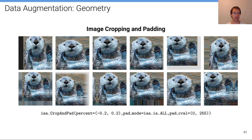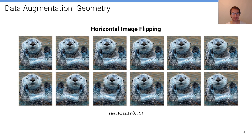Here's another example: image cropping and padding, which is very similar to the previous example. Instead of resizing, we have a padding operation — after cropping, the border is padded with a constant color, a color copied from the image borders, or some other fill strategy.